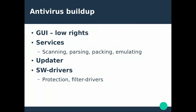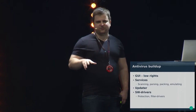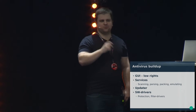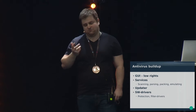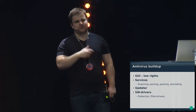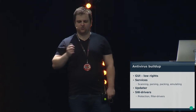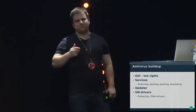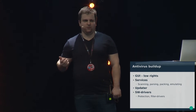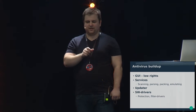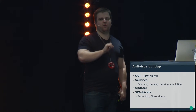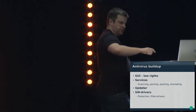Let's start from the beginning — what do antiviruses consist of? First of all, there's the GUI, the graphical user interface, where you click and say where to scan and what to do. Then there are multiple services, which is where the main meat of the antivirus is — they do scanning, parsing, unpacking, emulating, and all this kind of stuff. Then there are updaters, which are also usually services. And there are software drivers — not drivers that handle hardware, but software drivers that do things like protecting the antivirus itself. For example, if you try to kill the antivirus main process, the kernel drivers protect it. And there are filter drivers that filter what files are being opened in the file system.